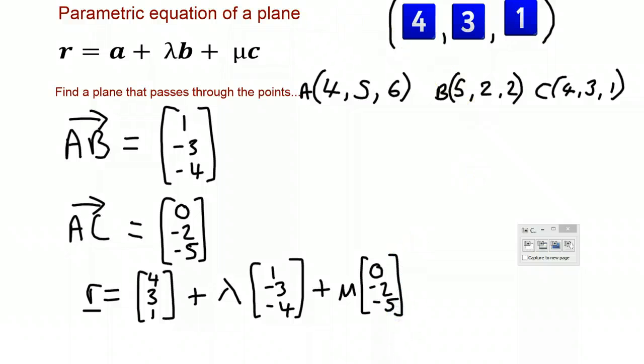I'm now going to go back to Autograph and we're going to just check to see whether this is actually the correct equation for our plane that does go through the three points that we randomly generated.